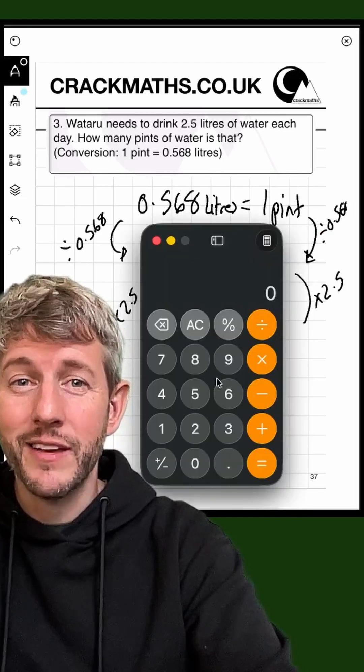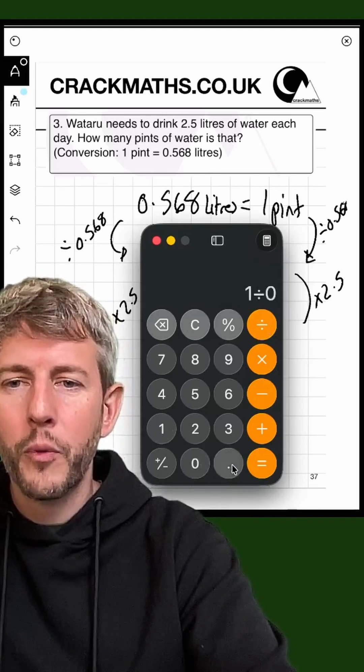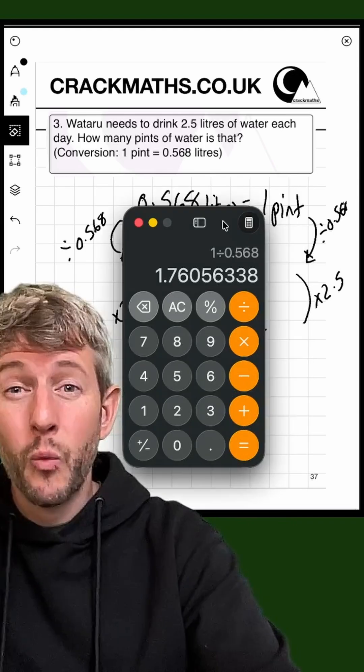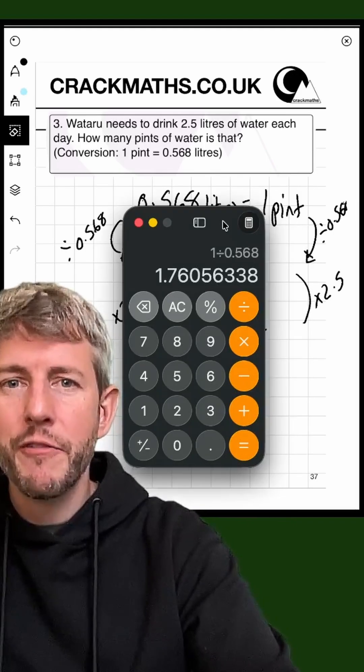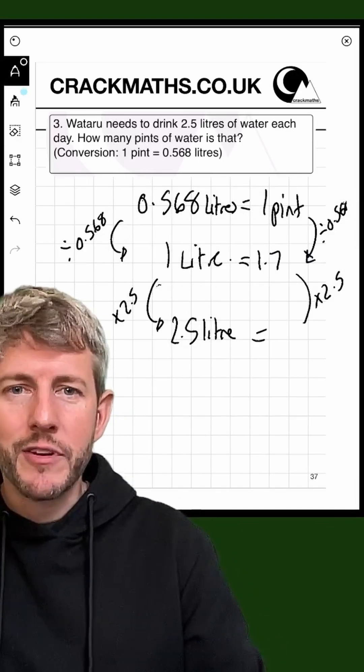Let's get out the calculator. First, we've got the one pint and we're dividing that by 0.568, and that equals 1.76056338. So I'm just going to temporarily write down 1.76.